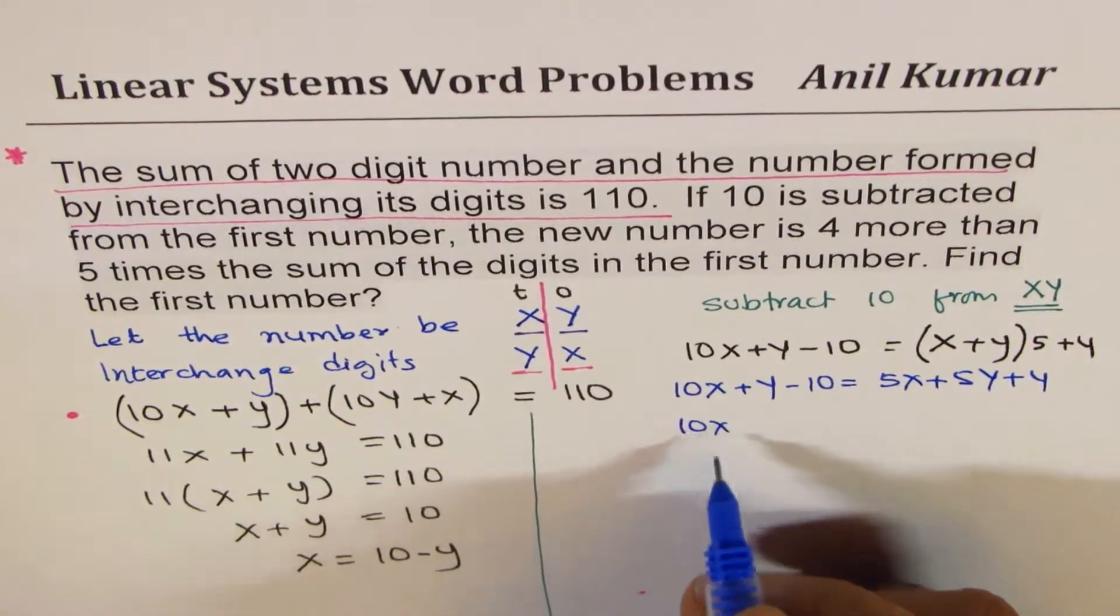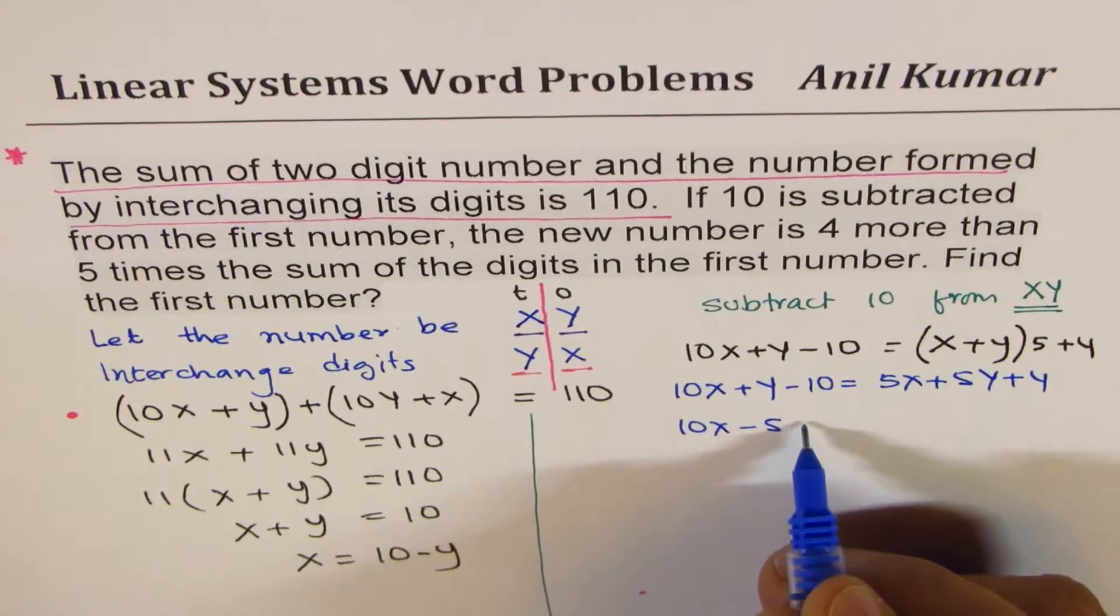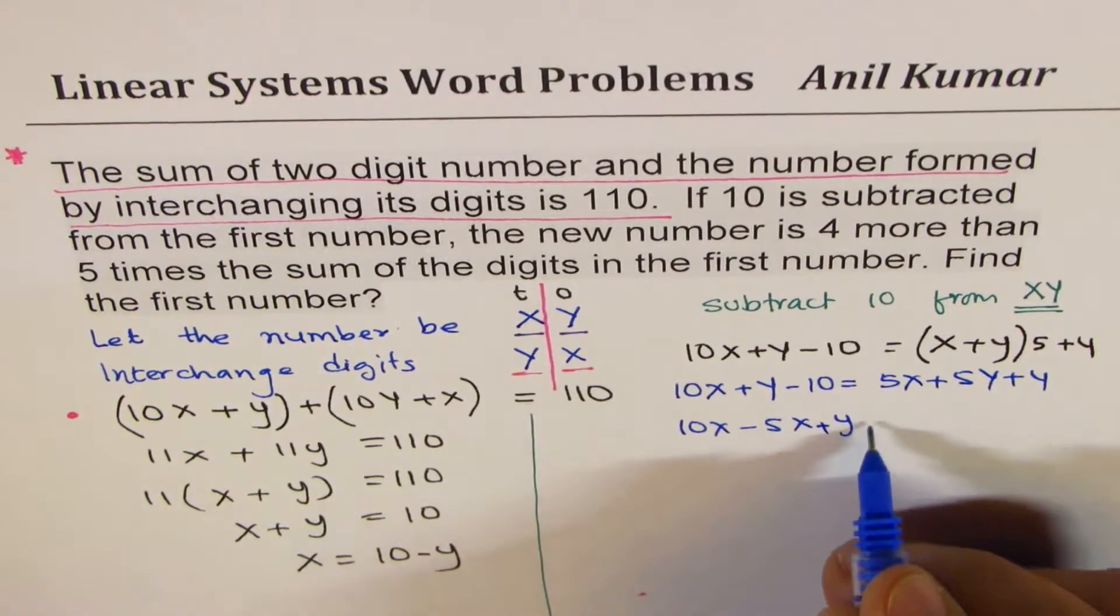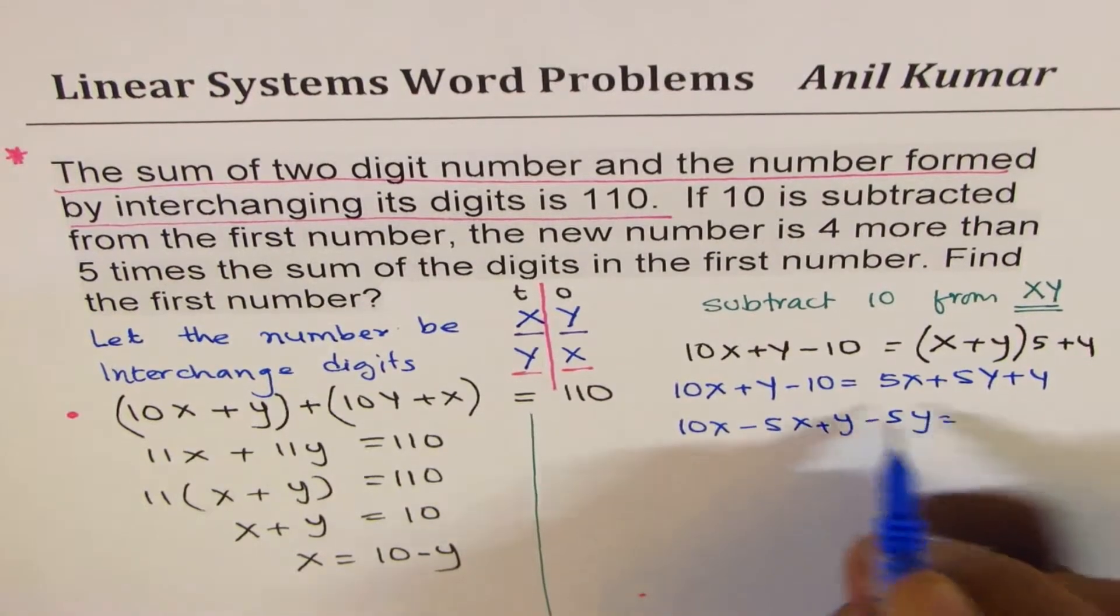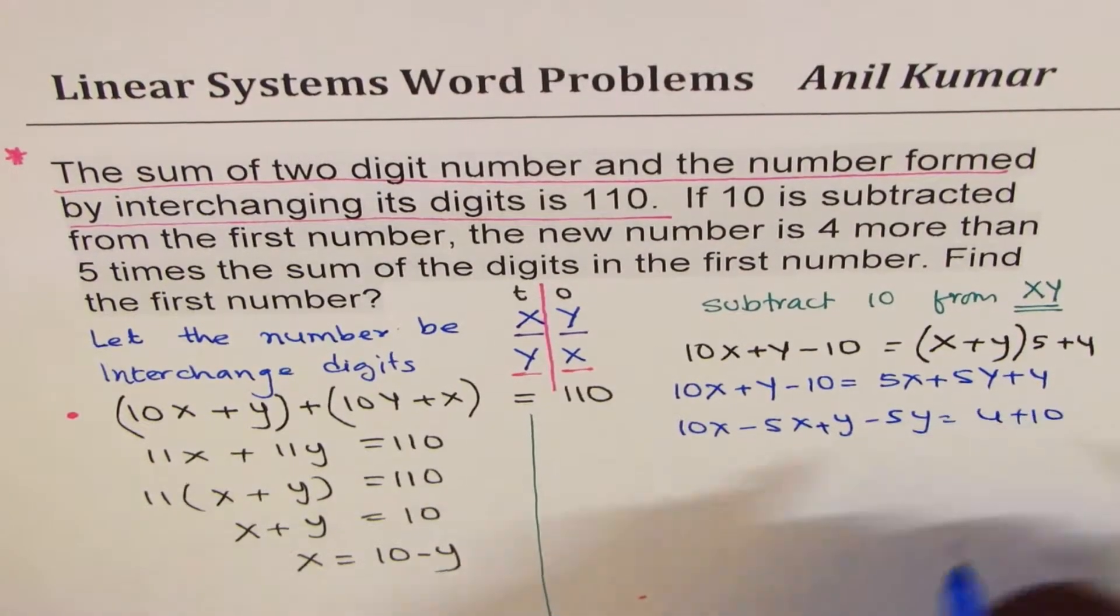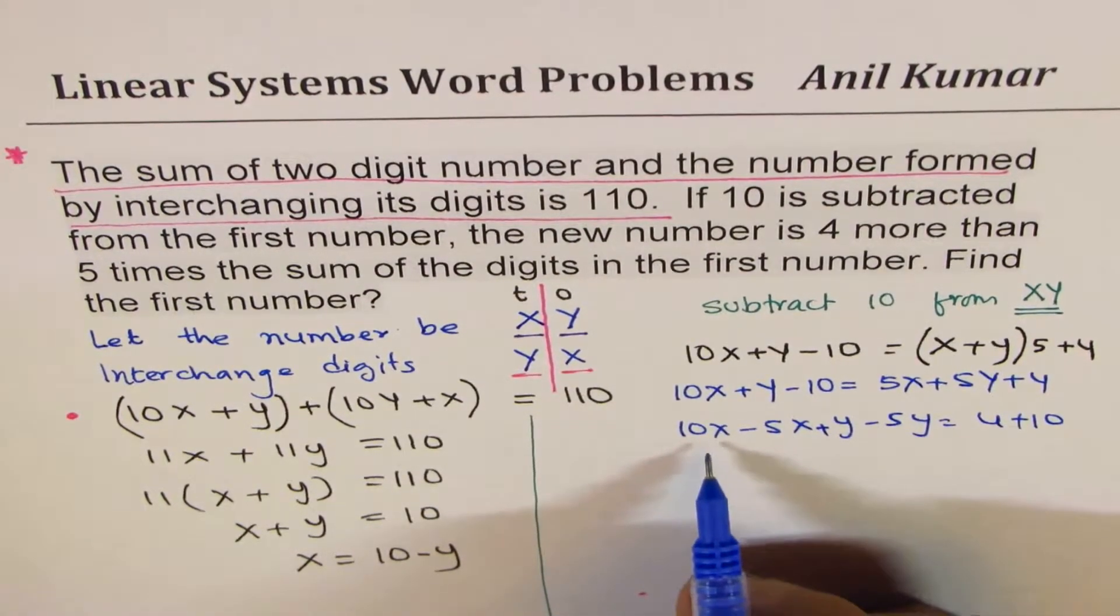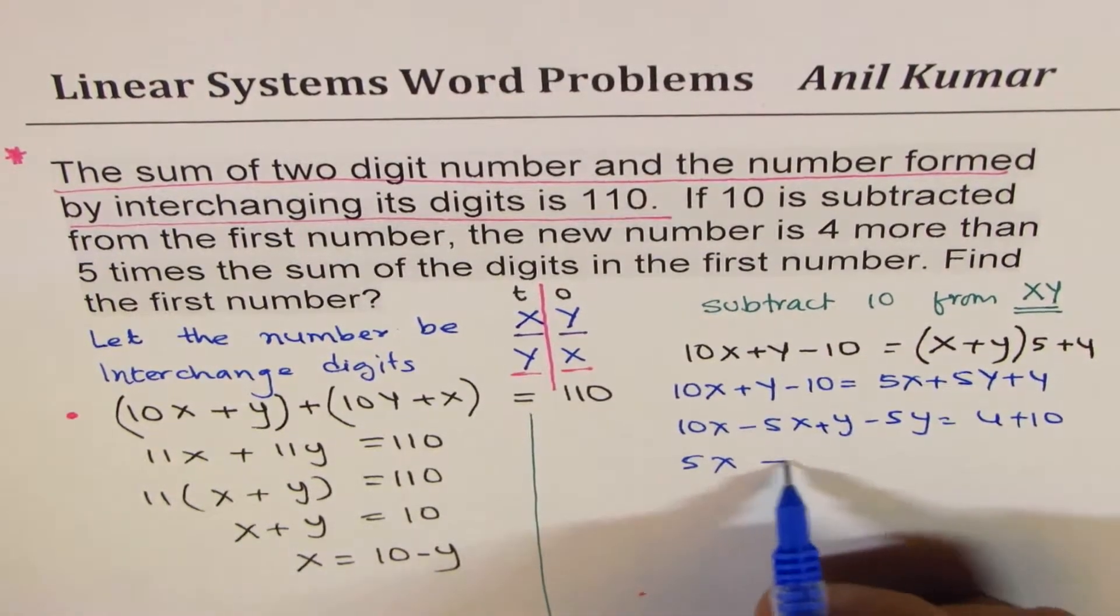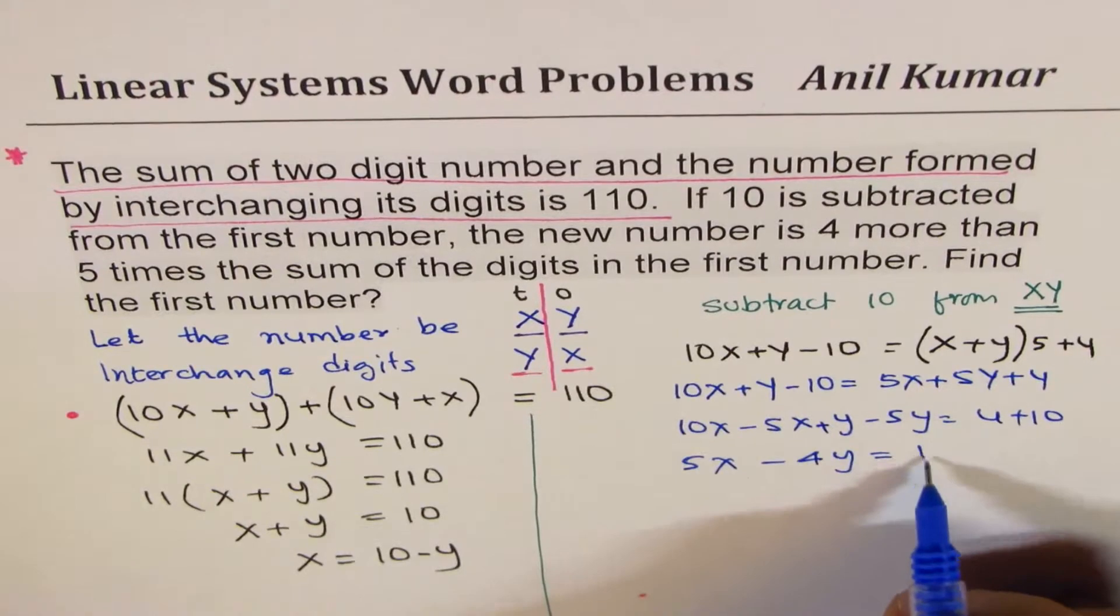Bringing x terms together, 10x minus 5x, y on this side also, I mean, plus minus 5y. Numbers on the other side, 4 plus 10. So that gives us 10x minus 5x is 5x, and this is minus 4y is equals to 14.